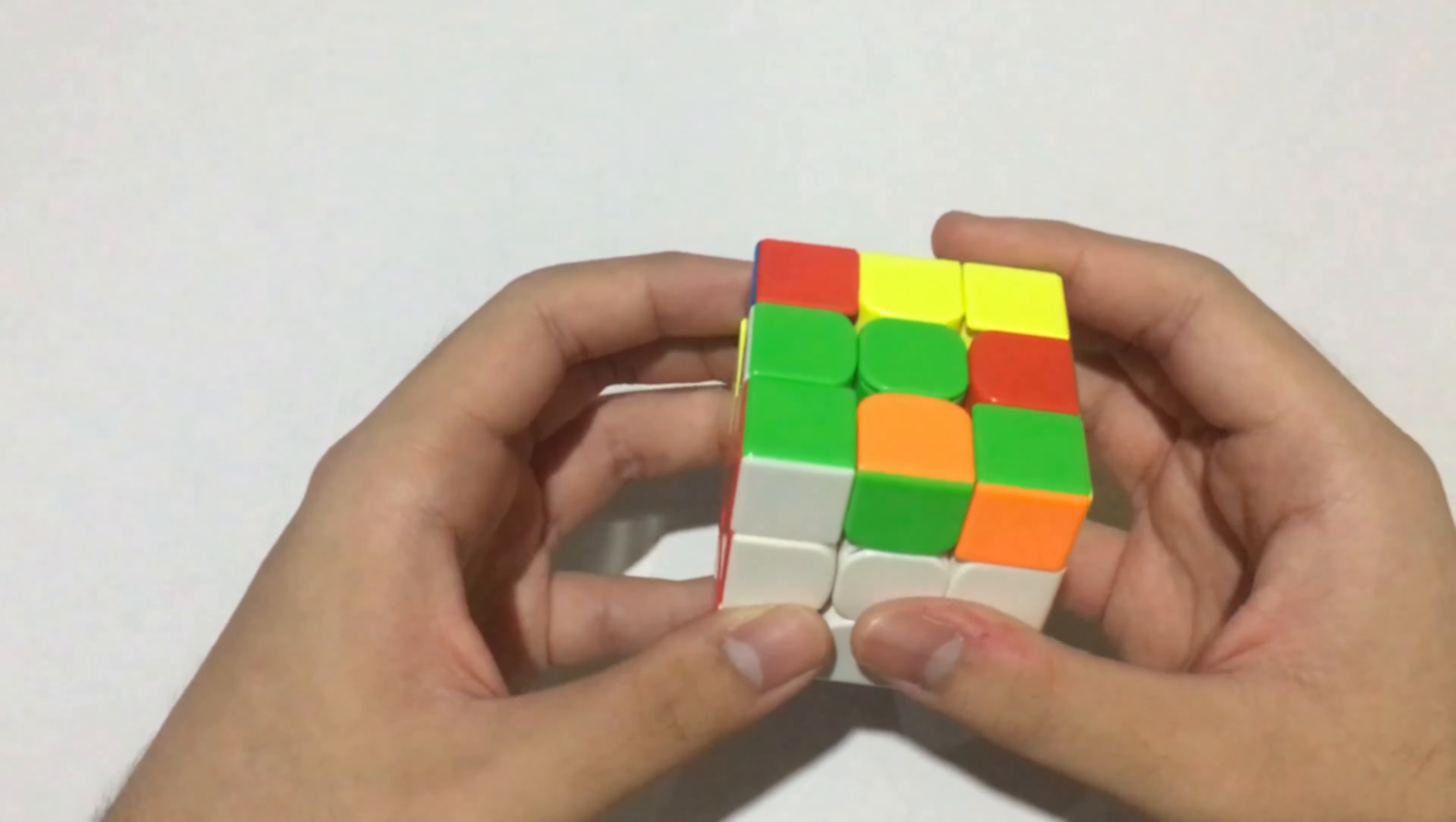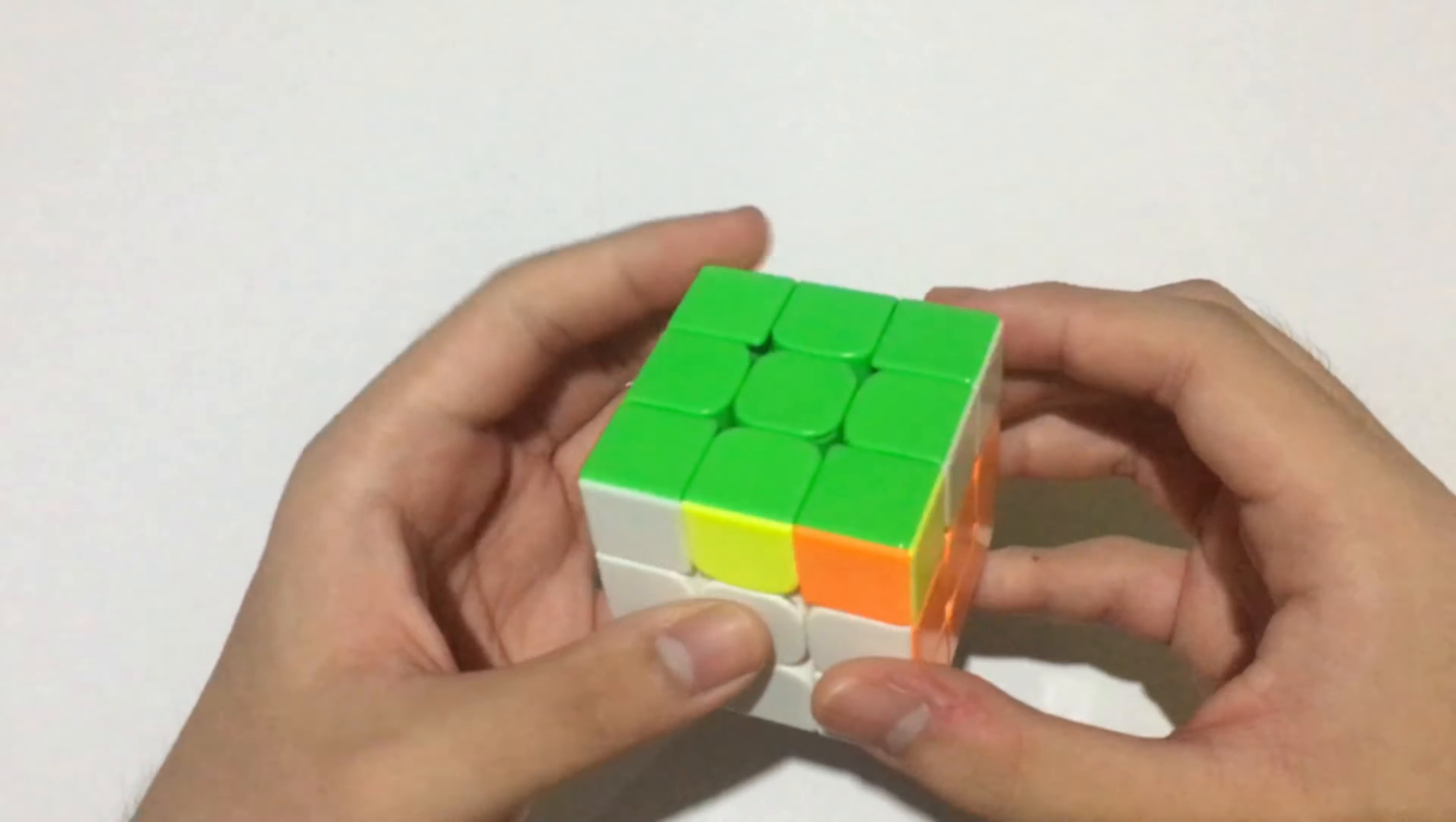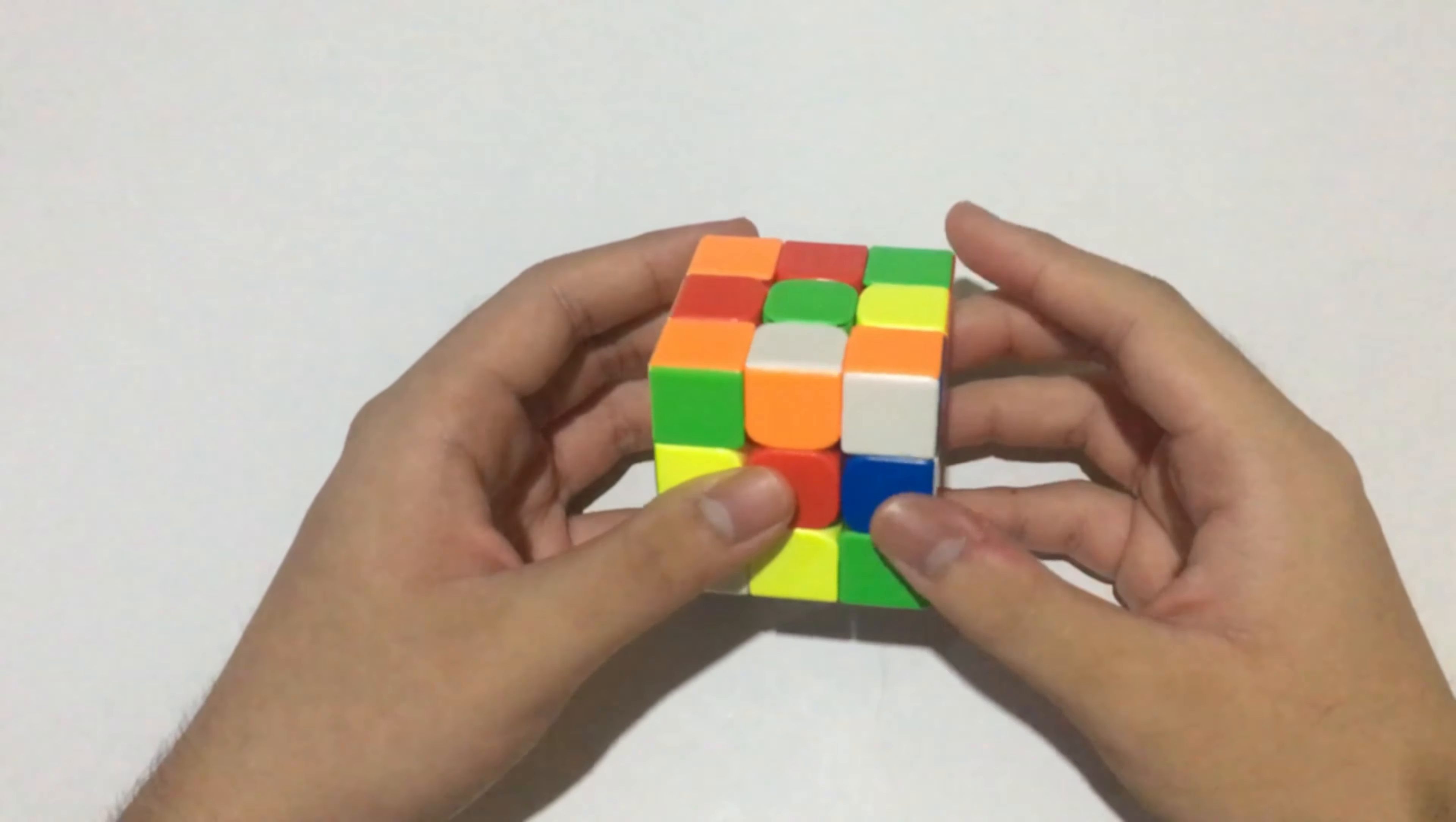But this case is not as bad as the other cases, so it's also okay. Then I have this very easy T-shape OLL and G perm.